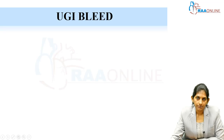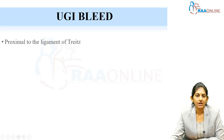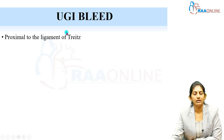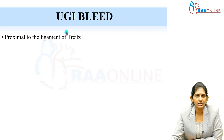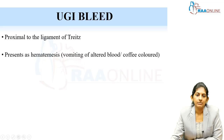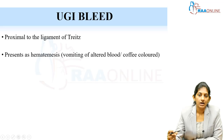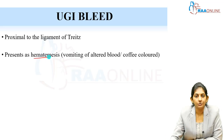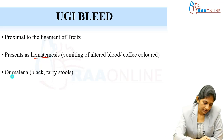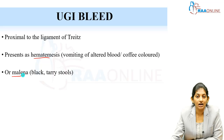What is an upper gastrointestinal bleed? Any bleeding which happens proximal to the ligament of Treitz is the UGI bleed. It can manifest either as hematemesis or melena. Hematemesis means vomiting of altered blood — the blood gets altered due to the presence of acid — so vomiting of dark blood or coffee-colored blood. Melena is black tarry stools.